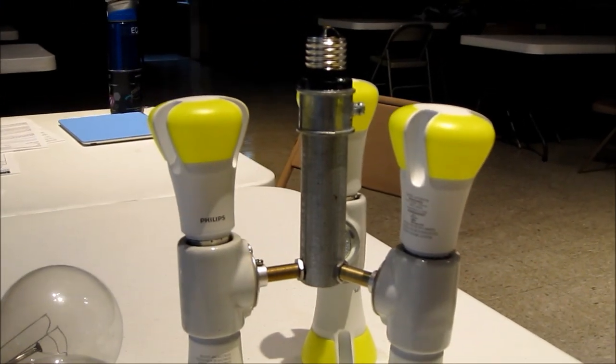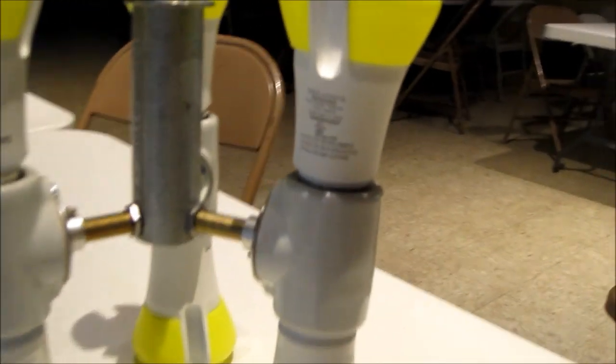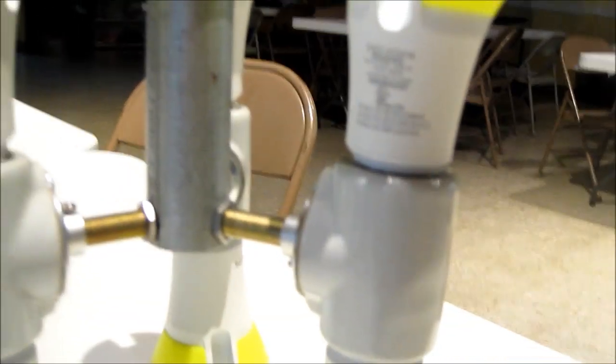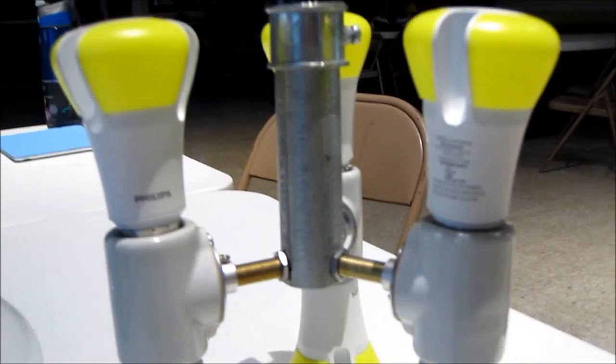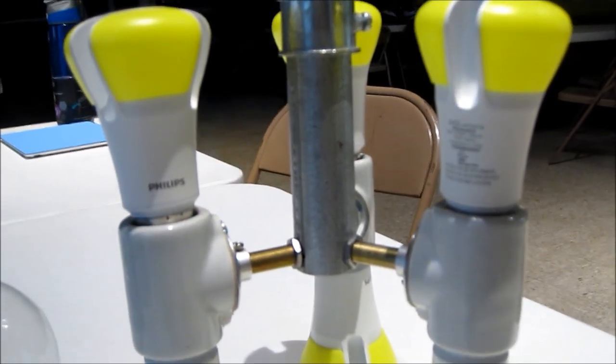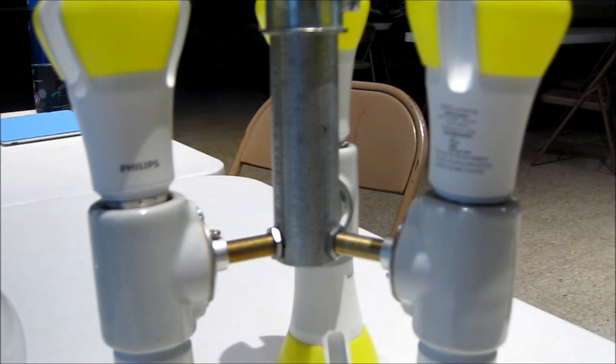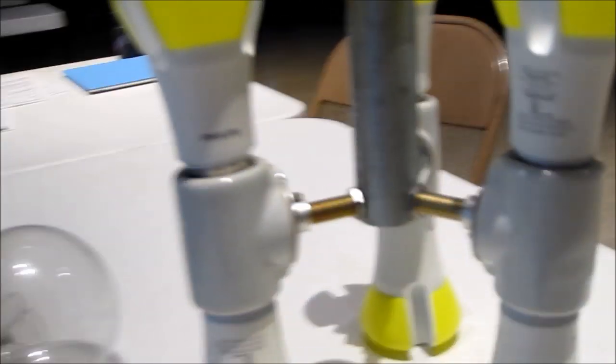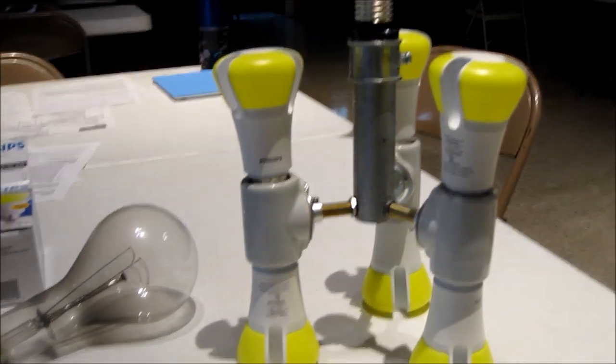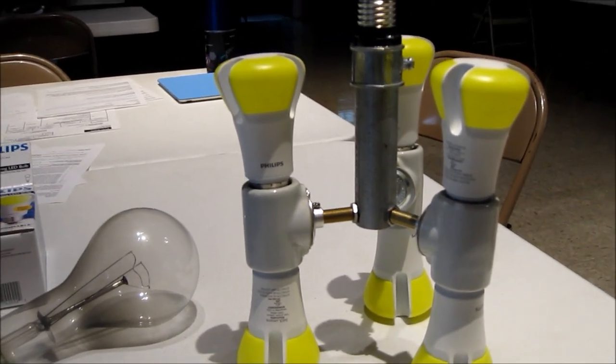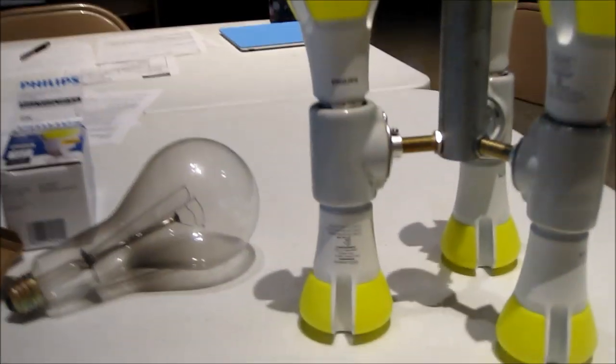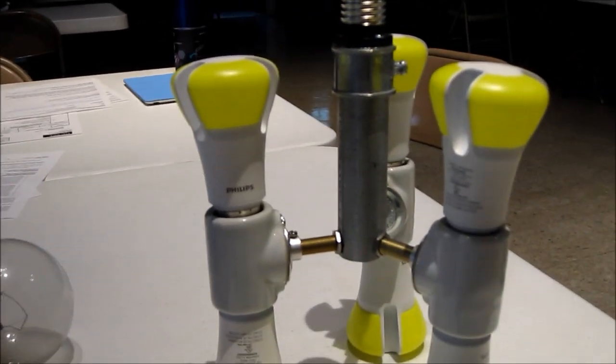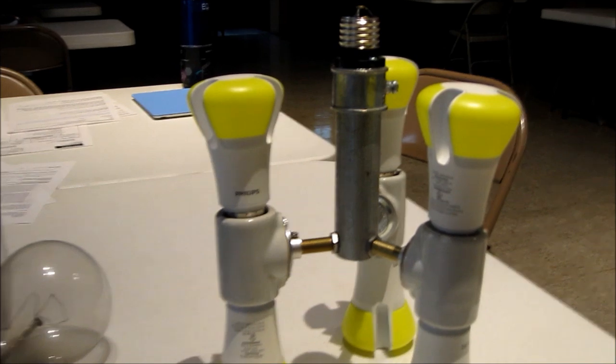These bulbs are 940 lumens, fully dimmable, 10 watts, 2700 Kelvin which is a warm white. They're a great bulb - we've been very happy with them and they should last us 20 to 30 years in our sanctuary, if not longer. So we hopefully will never have to replace another one of these again at Grace Church.